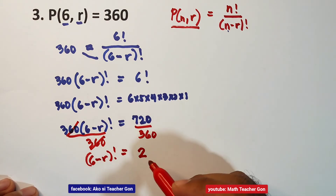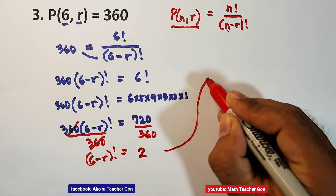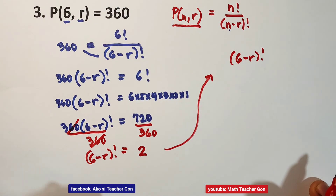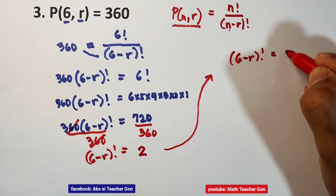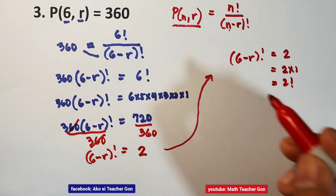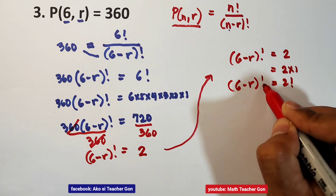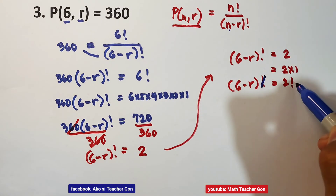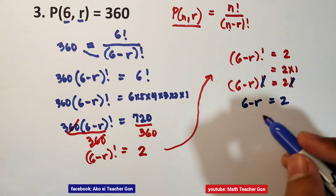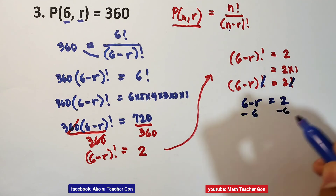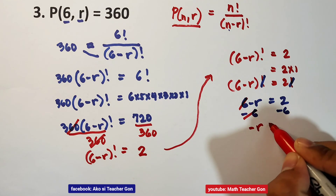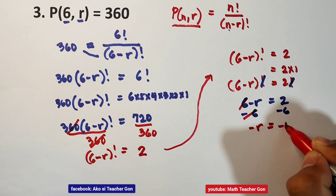So 6 minus r factorial equals 2. Since 2 equals 2 times 1, that is 2 factorial. Removing the factorial from both sides, we get 6 minus r equals 2. Subtracting 6 from both sides, the 6s cancel, leaving negative r equals 2 minus 6, which is negative 4. Therefore r equals 4.